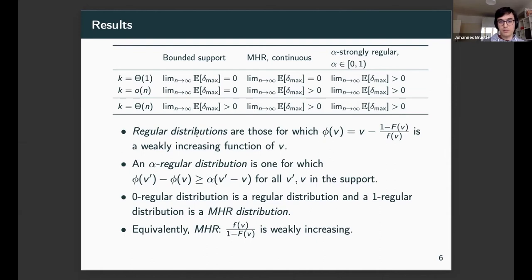There's the regular distributions, defined by phi(v) equals v minus (1 minus CDF)/PDF, and this should be weakly increasing in v. Then you have alpha-regular or alpha-strongly regular distributions, where phi(v') minus phi(v) is greater or equal to alpha times (v' minus v). You could get some intuition where, as alpha grows (between 0 and 1), the restriction on phi becomes more strict. Seen another way, if you start at alpha equals 1 and go down to 0, you're permitting distributions with increasingly heavy tails. If you substitute alpha equals 0, you get back the regular distribution, and if you substitute alpha equals 1, you get an MHR distribution or monotone hazard rate.